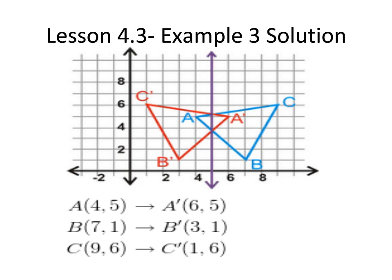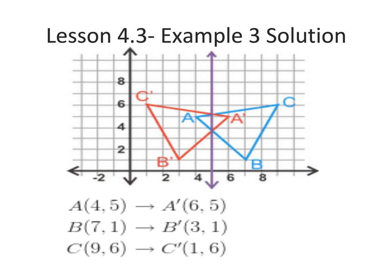Therefore, the image's vertices are the same distance away from x equals 5 as the preimage. As with reflecting over the Y axis, or x equals 0, the Y coordinates will stay the same.